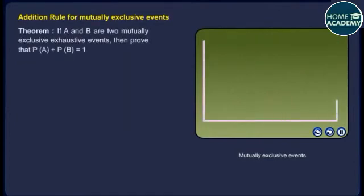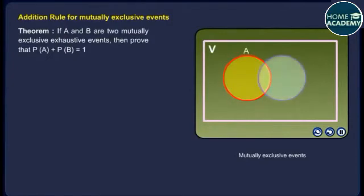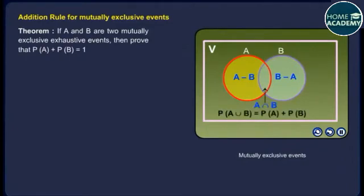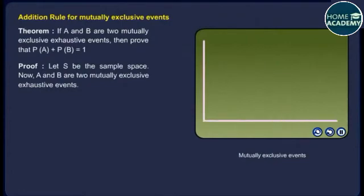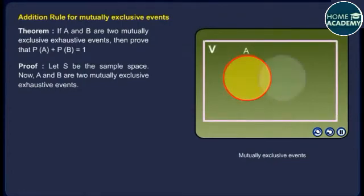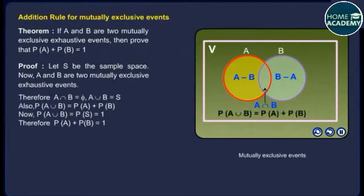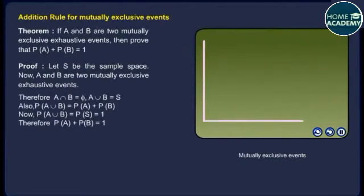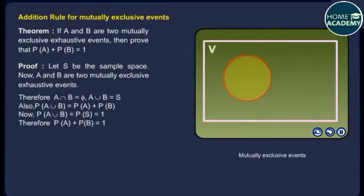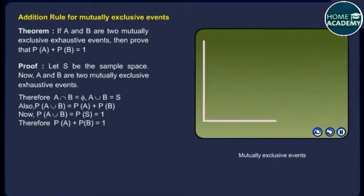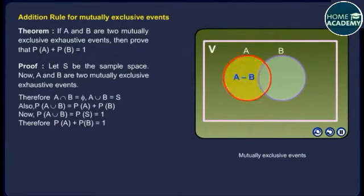Theorem. If A and B are two mutually exclusive exhaustive events, then prove that P(A) + P(B) = 1. Proof. Let S be the sample space. Since A and B are mutually exclusive exhaustive events, A∩B = ∅ and A∪B = S. Also, P(A∪B) = P(A) + P(B). Now P(A∪B) = P(S) = 1. Therefore P(A) + P(B) = 1.